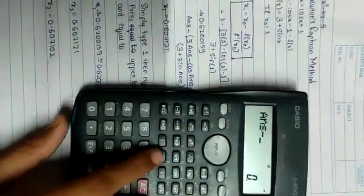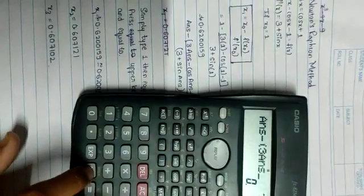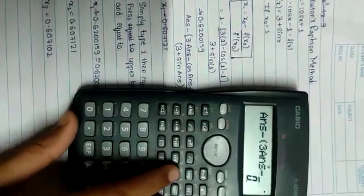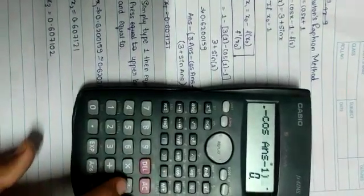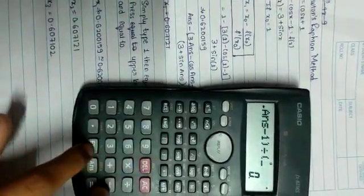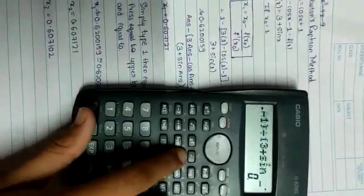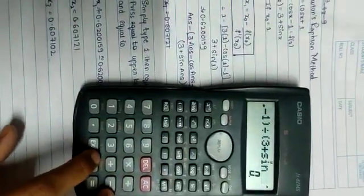Answer minus 3 answer minus cos answer minus 1 bracket divided by 3 plus sin answer.